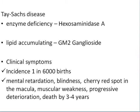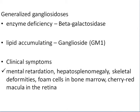Tay-Sachs disease involves a deficiency of hexosaminidase A, with lipid accumulation of GM2 ganglioside. It occurs in approximately 1 in 6,000 births. Clinical symptoms include mental retardation, blindness, cherry-red spots in the macula, macular weakness, and progressive deterioration leading to death by 3-4 years of age.